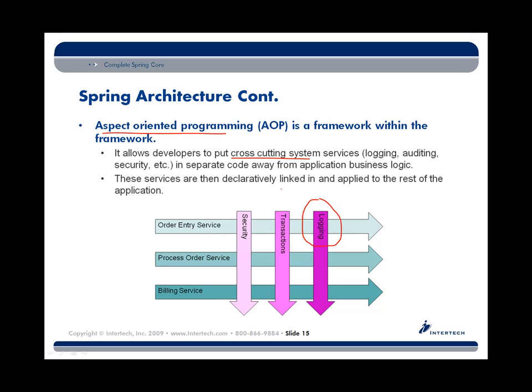We're going to put that system-concern code in separate classes, and then through declarative links — typically through XML or annotations — we're going to apply the calling of those services like logging, security, and transactions through this framework. They'll be applied automatically to the business code without that code actually residing in our business code, so we isolate the systemy stuff from the business stuff.